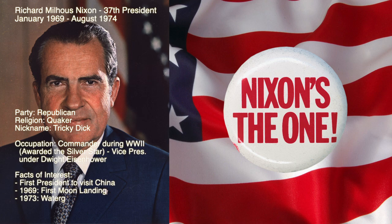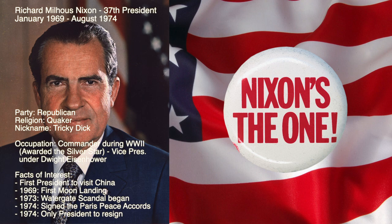Richard Milhous Nixon was the 37th president of the United States. He served from January 1969 until August of 1974. He was a Republican and a Quaker. His nickname was Tricky Dick. His prior occupation included service in the U.S. Navy during World War II, where he won the Silver Star, and he was vice president under Dwight David Eisenhower.